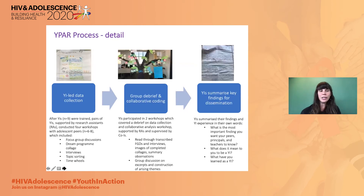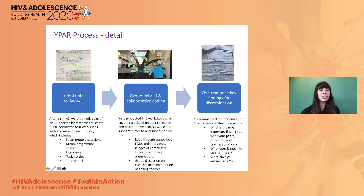The fourth stage was youth-led data collection. After the YIs were trained, they conducted workshops in pairs and they were supported by research assistants who were graduate students. These workshops included focus group discussions where they explored aspects of the program, relationships, and friendships. They also created a collage about what their dream program would look like for girls. They conducted interviews with their peers, a topic sorting activity where they prioritized sexual health topics, and they completed time wheels.